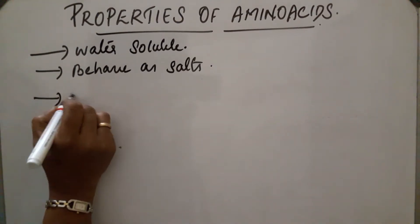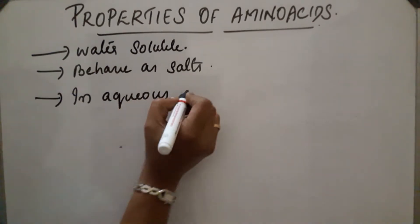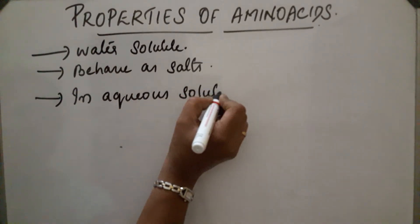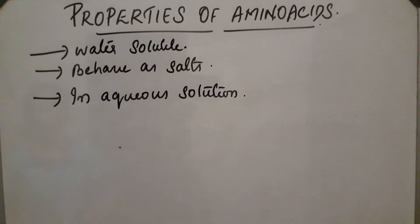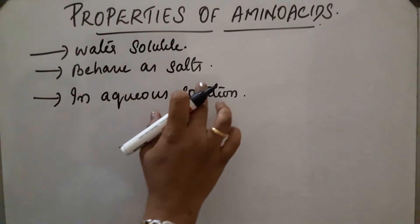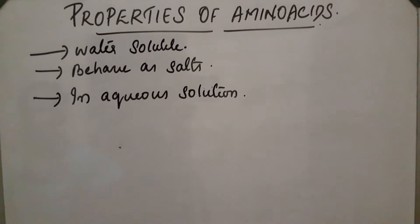In aqueous solution, the acid group loses one proton, and the amino group accepts those protons, and they form a dipolar ion called a zwitterion. These two forms exist in equilibrium in the aqueous solution.